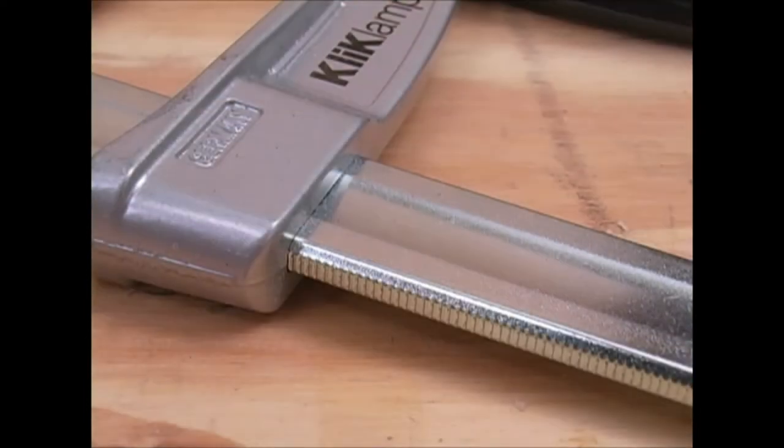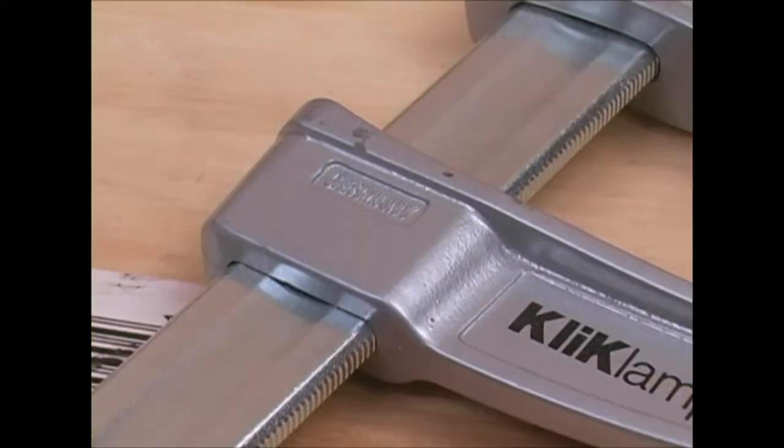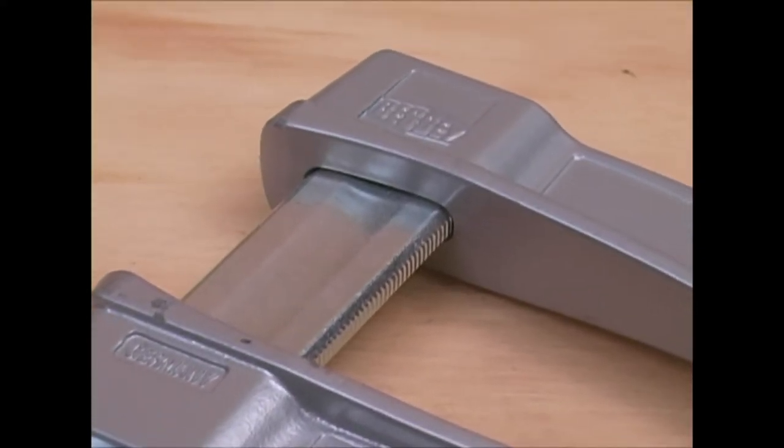Precisely formed teeth along both edges of the bar lock the movable jaw when pressure is applied. Heavy bosses at the bar help the jaws resist the clamping pressure.